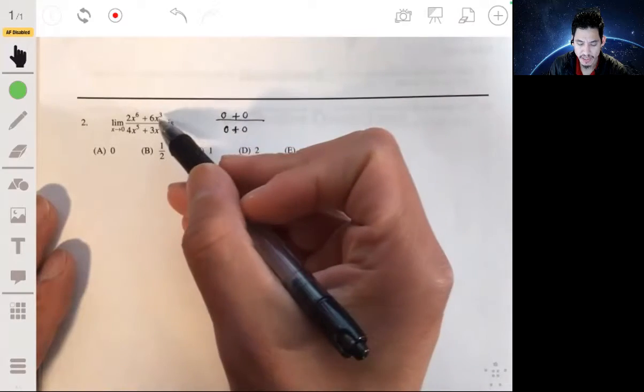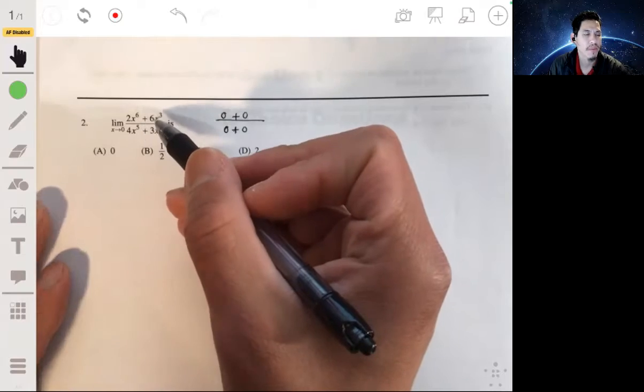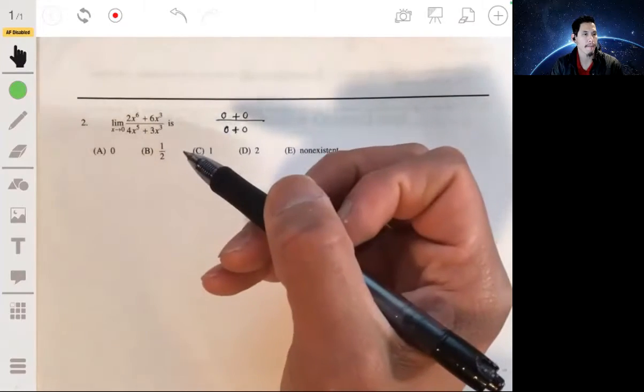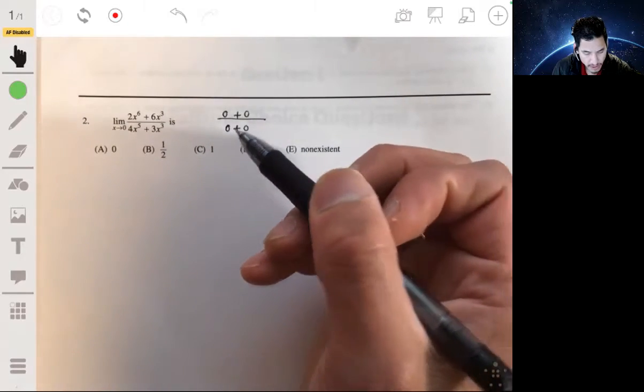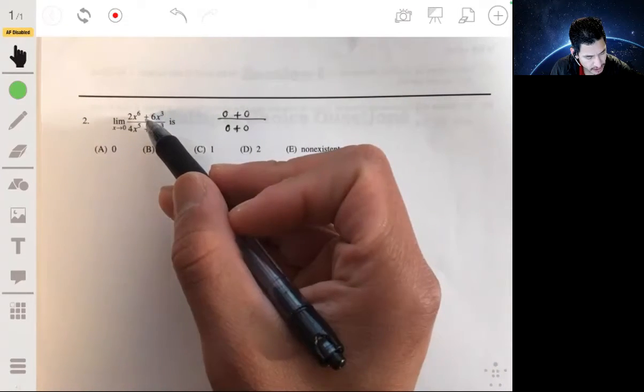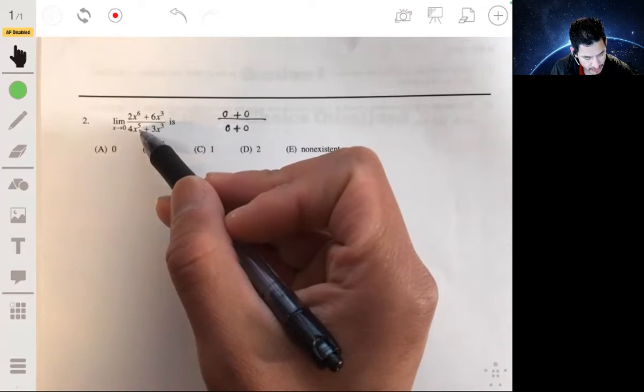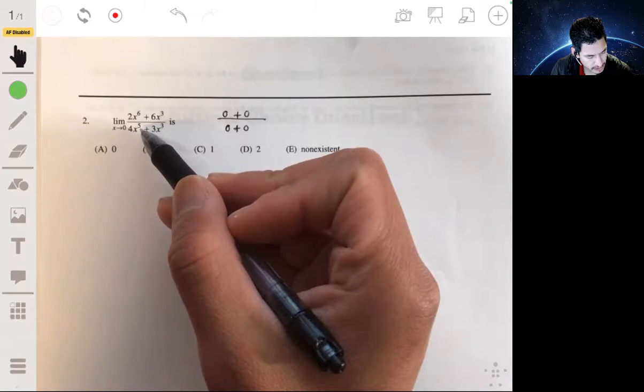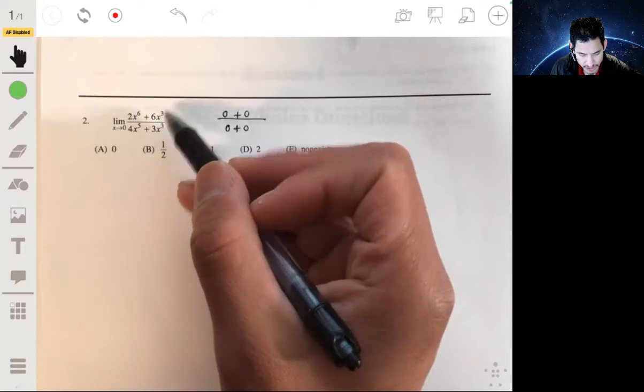One technique that maybe you covered in calculus is just divide everything by x to some power, and then work your way from there. We have x to the sixth, x to the third, and x to the fifth. So we're going to divide everything by x cubed.